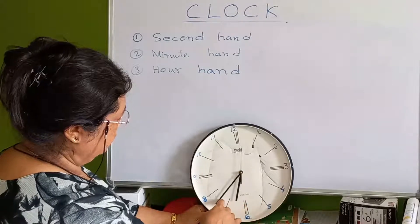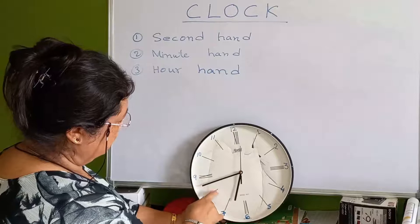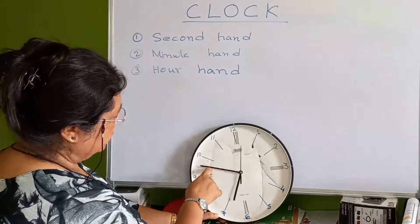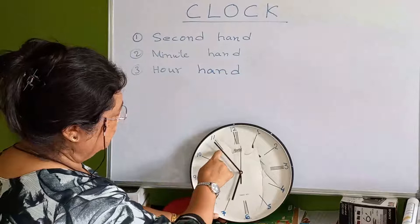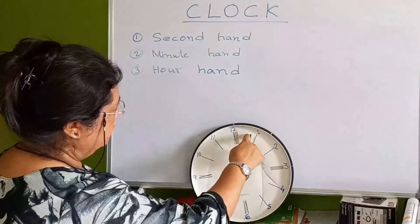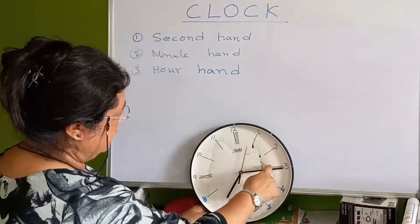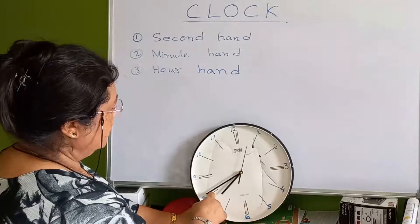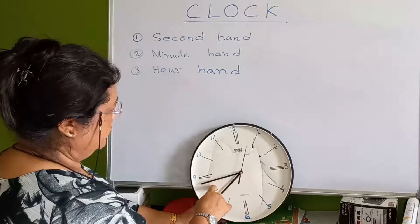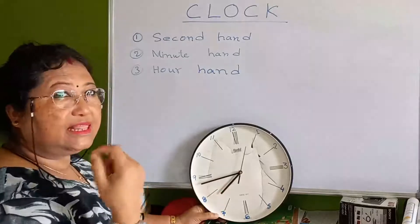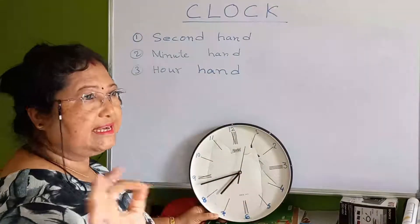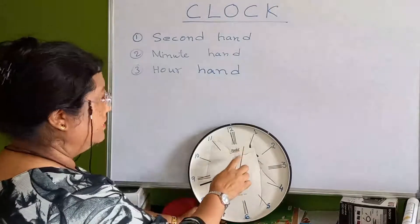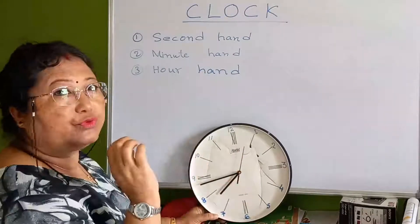See, as I move this minute hand, the hour hand is also moving. This short one is the hour hand and it moves with the movement of the minute hand. You don't have to worry much about the second hand — the main thing we need to know is the minute hand and the hour hand.